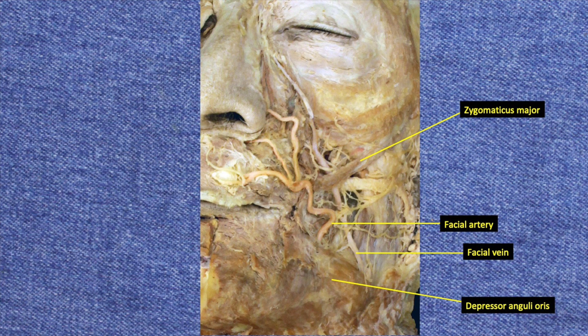Also note in this image the depressor anguli oris muscle. This muscle is innervated by a small branch of the facial nerve that is liable to be transected during a cosmetic facelift. Surprisingly, this is a serious complication because without this muscle the patient cannot smile well — the zygomaticus major, which allows you to smile, needs some stability at the corner of the mouth to produce a good smile. If you smile and put your fingers under the corner of your mouth, you will feel the depressor anguli oris contract.